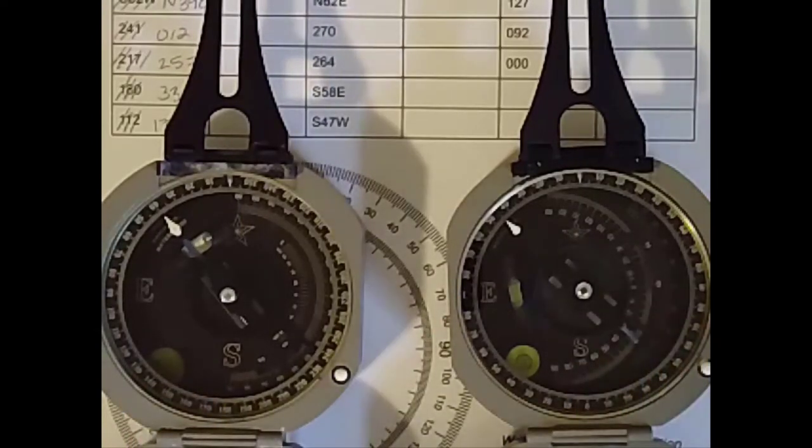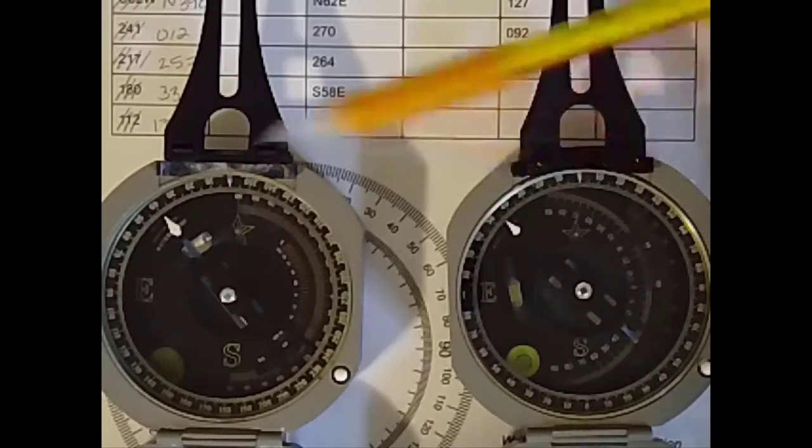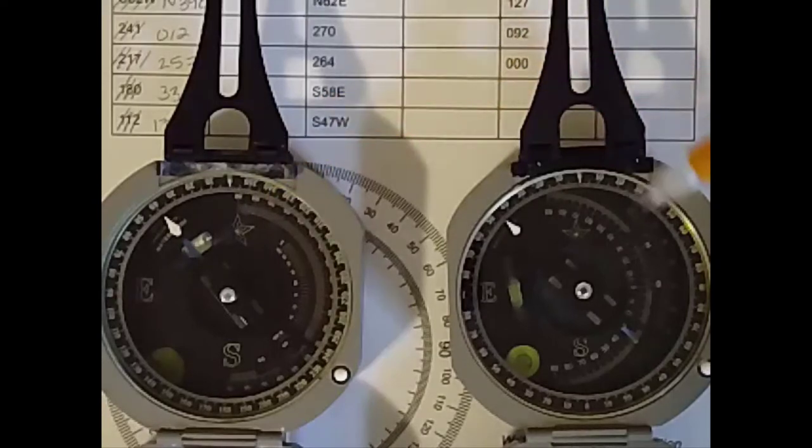You'll also notice that I removed magnetic declination from both of these. So I've got the index pen set to zero in both compasses. And the only difference between these two compasses is the way that the graduated circle is notated.